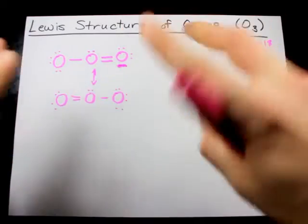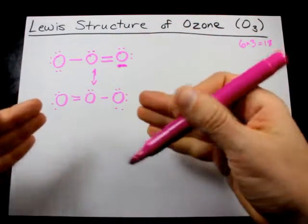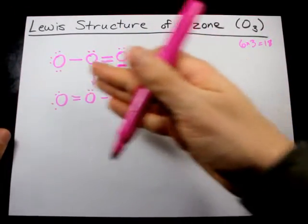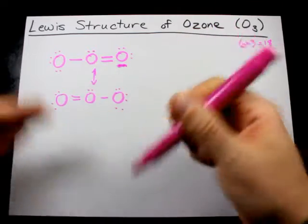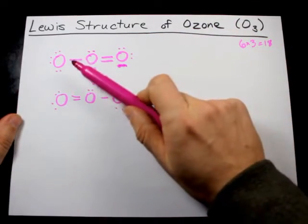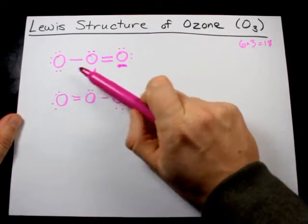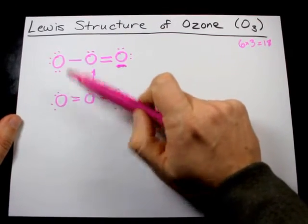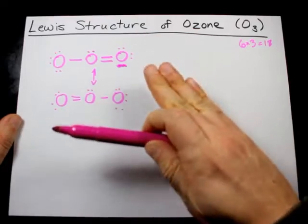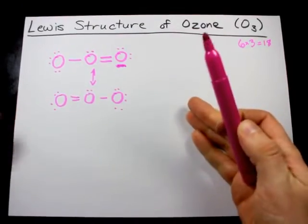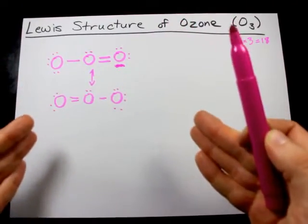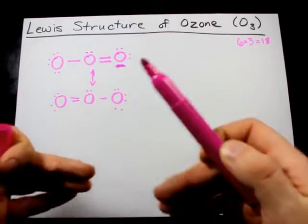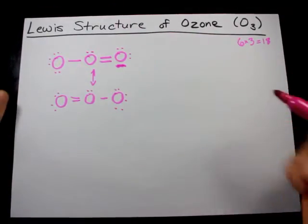Both are equally valid, and the actual structure of ozone is somewhere halfway between the two. That is to say, the actual bond between an outer oxygen and an inner oxygen is about halfway between a single and double bond. It is not a single bond or a double bond. It is somewhere in between. Intermediate strength, intermediate length, all that stuff.